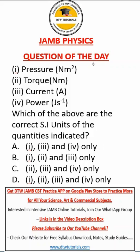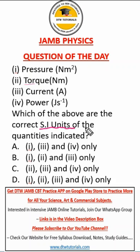We have a physics question here. It says: pressure, torque, current, power — which of the above are the correct SI units of the quantities indicated? So these are the quantities and these are the SI units, and we have to confirm which of them is correct.